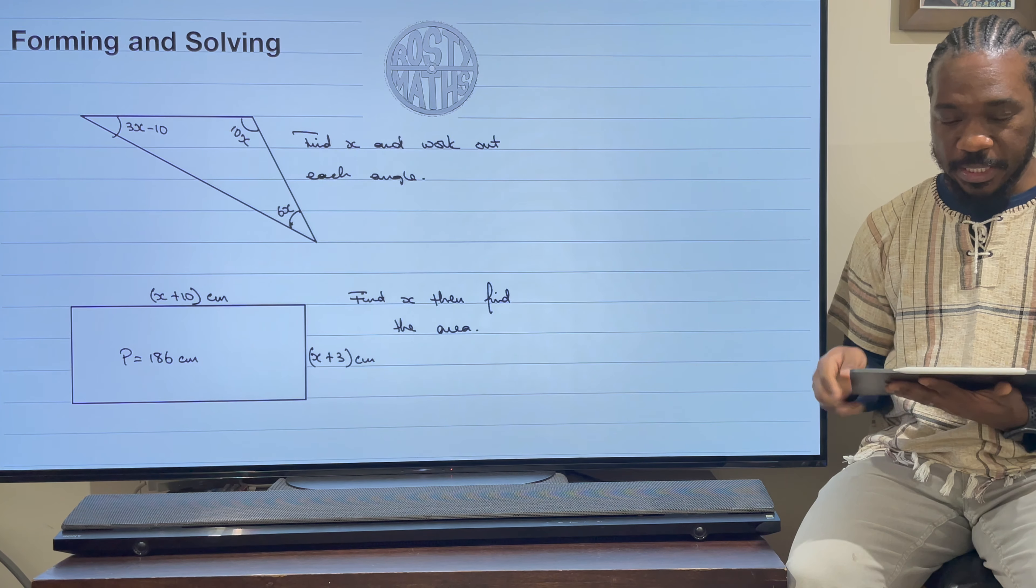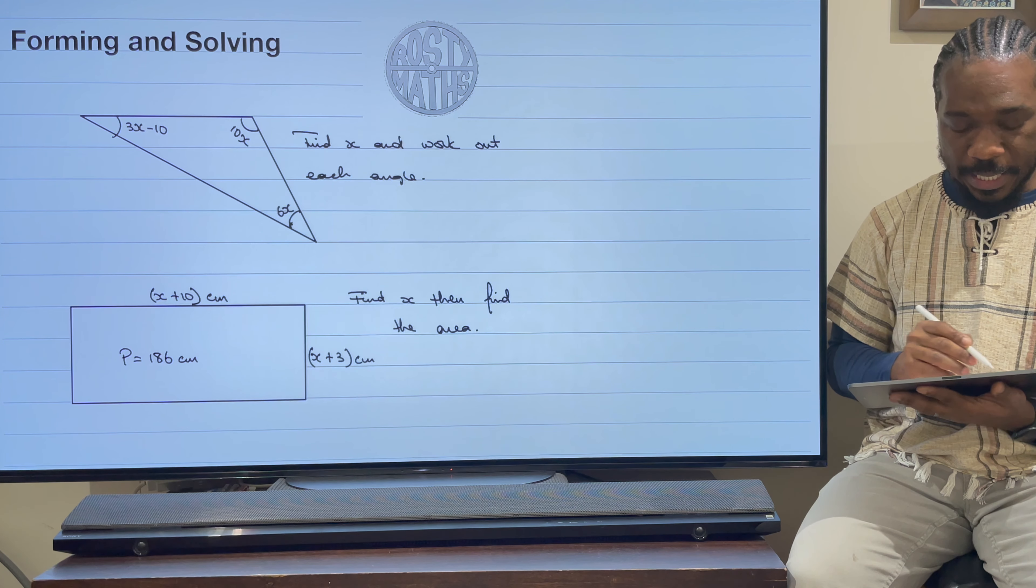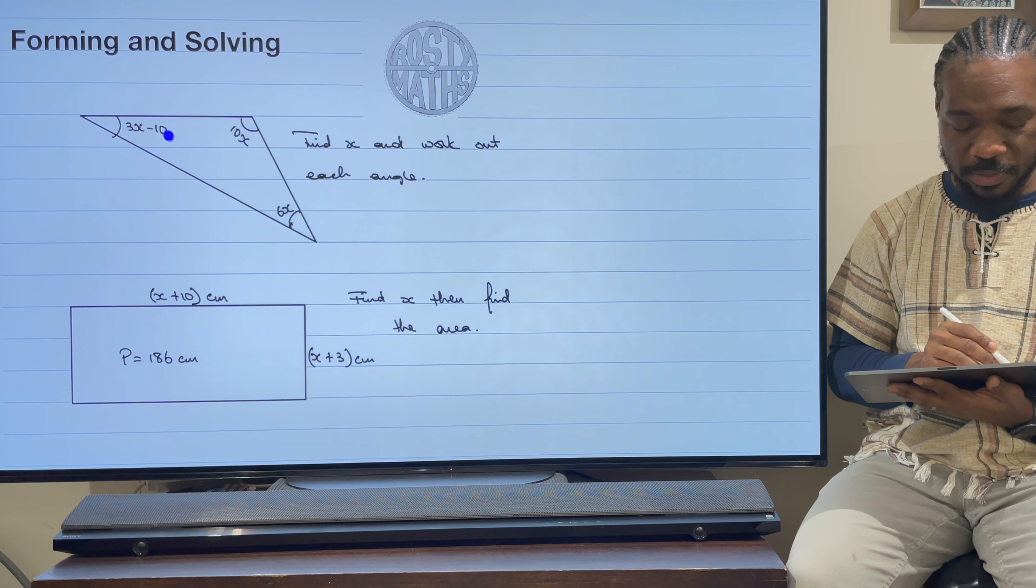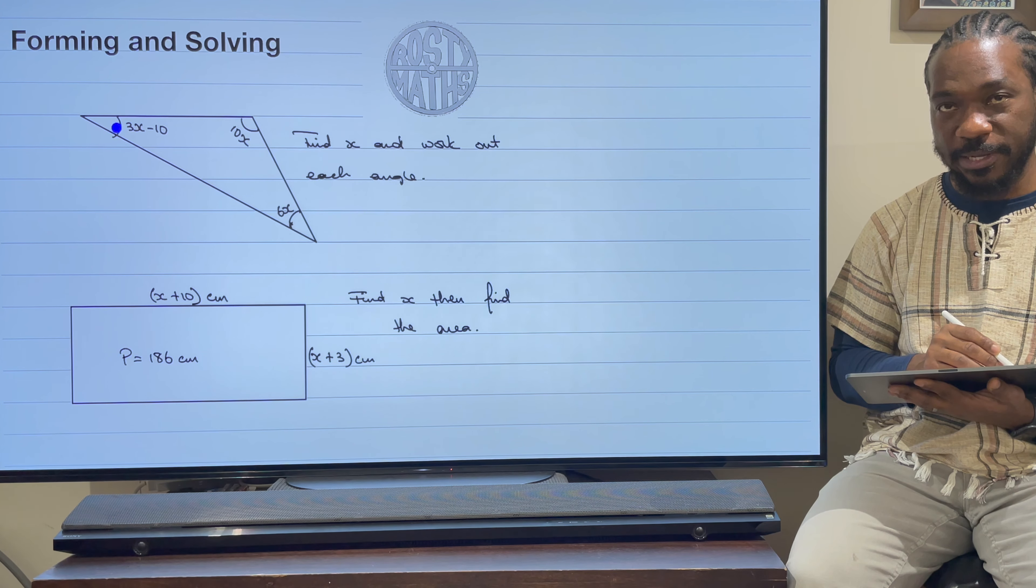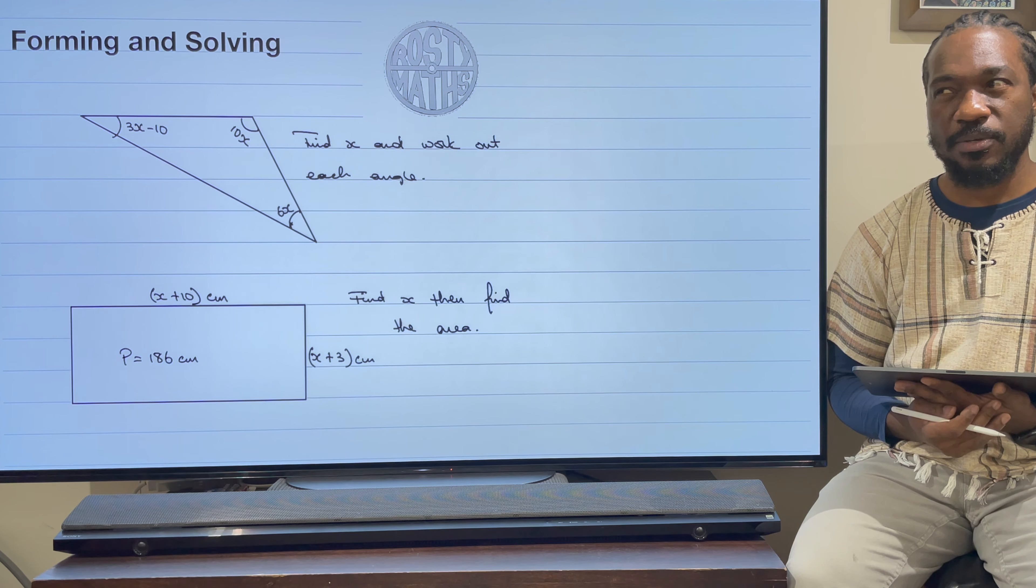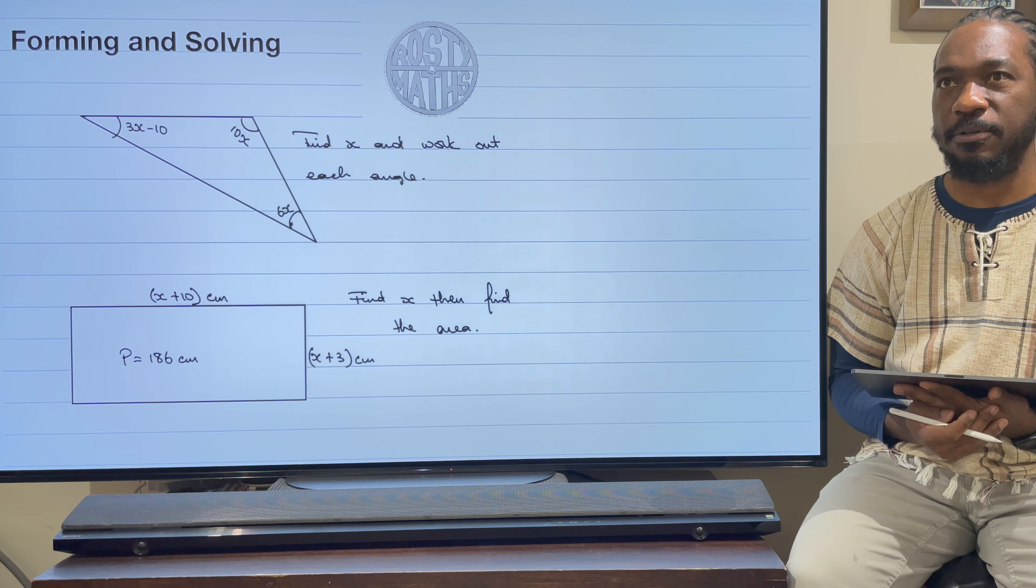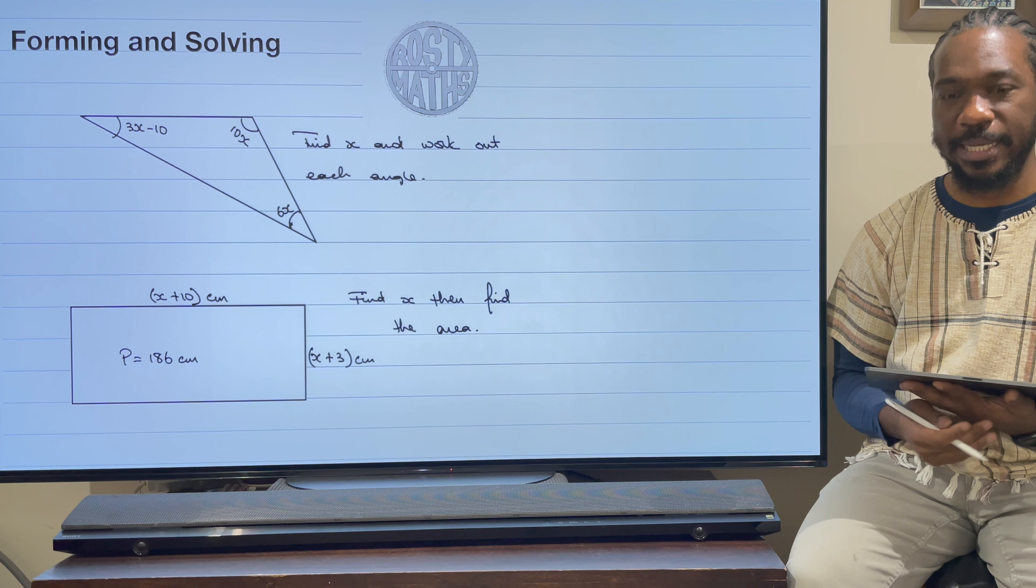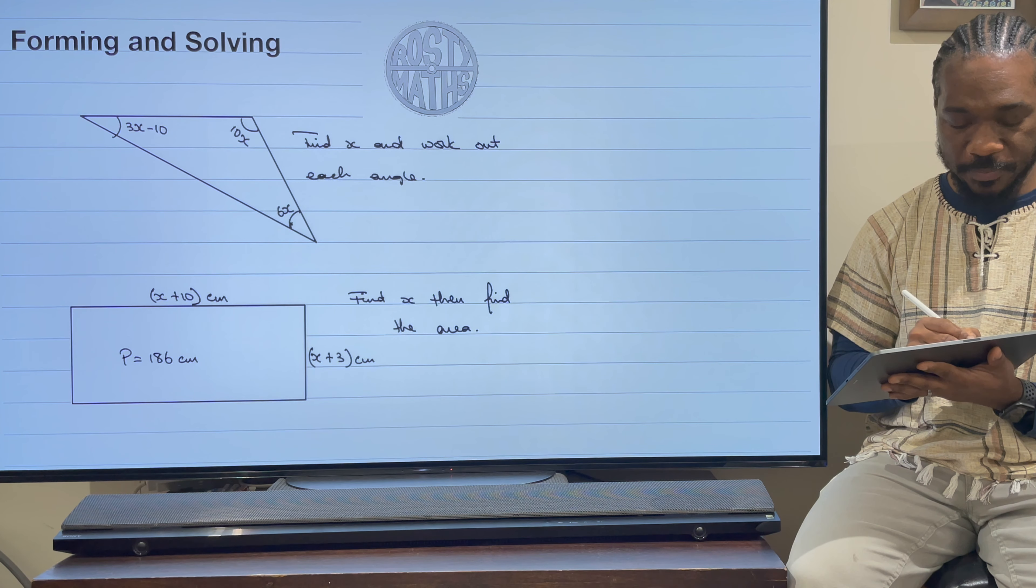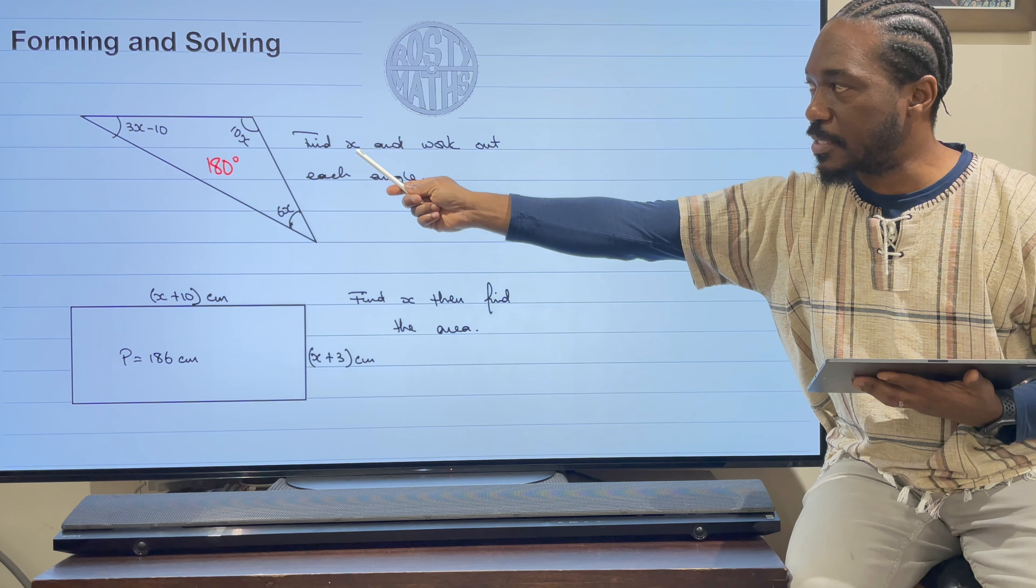Let's jump into it and see what happens. Now, first things first, we have got a triangle and the angles are given as expressions. So you can see I've got an expression 3x minus 10 is this angle here, this angle is 10x, and that angle here is 6x. The fact that I've just mentioned angles, the first thing in my mind is: what do all the angles in a triangle add up to? We've been doing this since primary school, so we know that it all adds up to 180 degrees.